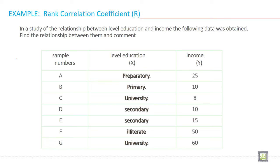In a study of the relationship between level of education and income, the following data was obtained. Find the relationship between them and comment. This is one example and it is given.